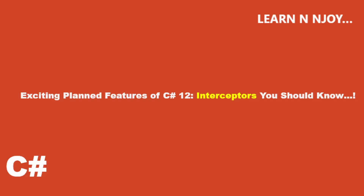Hello friends, welcome back to our channel. Today we have an exciting topic to discuss: interceptors in C# 12, which is one of the proposed features for C# 12. Interceptors are an experimental compiler feature that allows us to declaratively substitute method calls at compile time. They provide a fascinating way to modify the behavior of existing code by adding new code to a compilation.